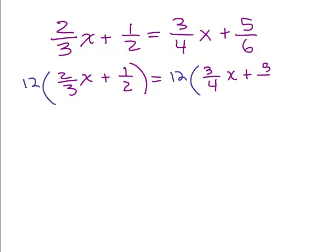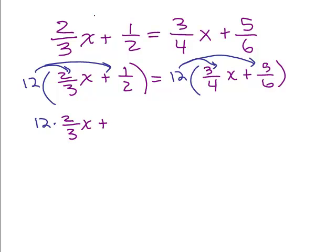Make sure you distribute 12 to all the terms. So I have 12 times 2/3x plus 12 times 1/2 equals 12 times 3/4x plus 12 times 5/6.